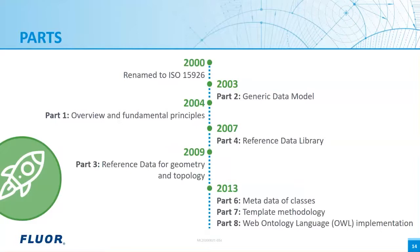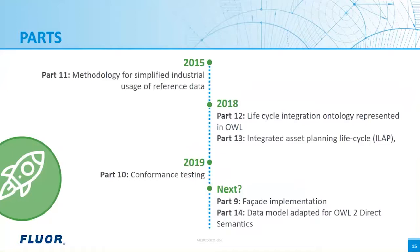This is the sequence in which the parts were released. The generic data model, the overview, and the reference data library came out first. The reference data for geometry — about 2D and 3D symbols — was released after that. The metadata for classes covered the attributes given to classes in the reference data library. The template methodology was made to simplify the use of the generic data models; templates are information objects that comprise a small data model. The web ontology language implementation uses W3C standards for data integration and data warehousing.